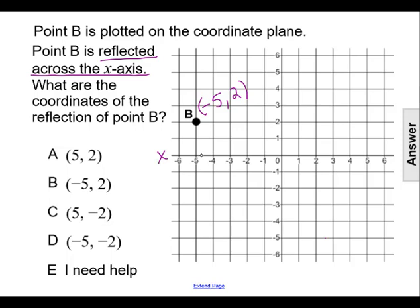So it is going to have the same x-coordinate as point B. We're still going to be at negative 5 from the origin.